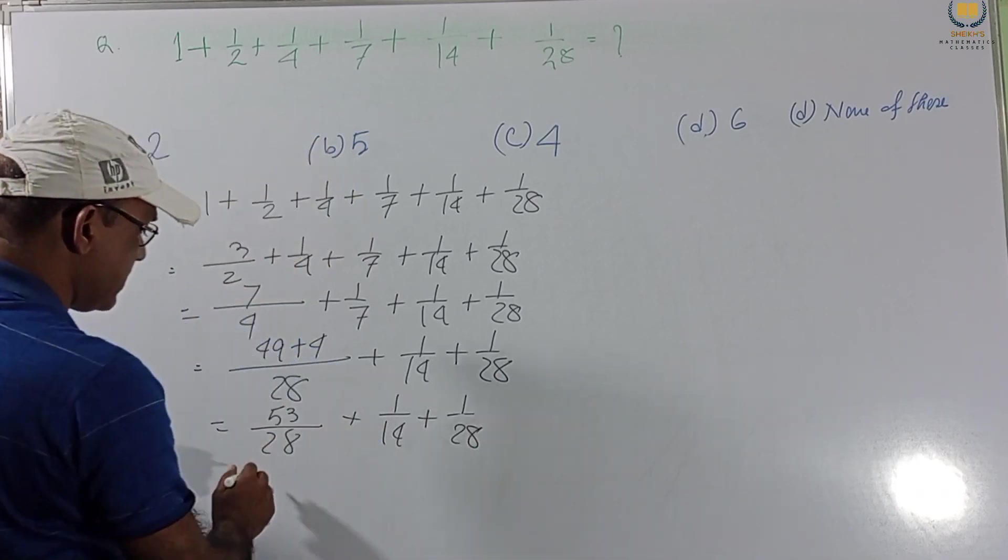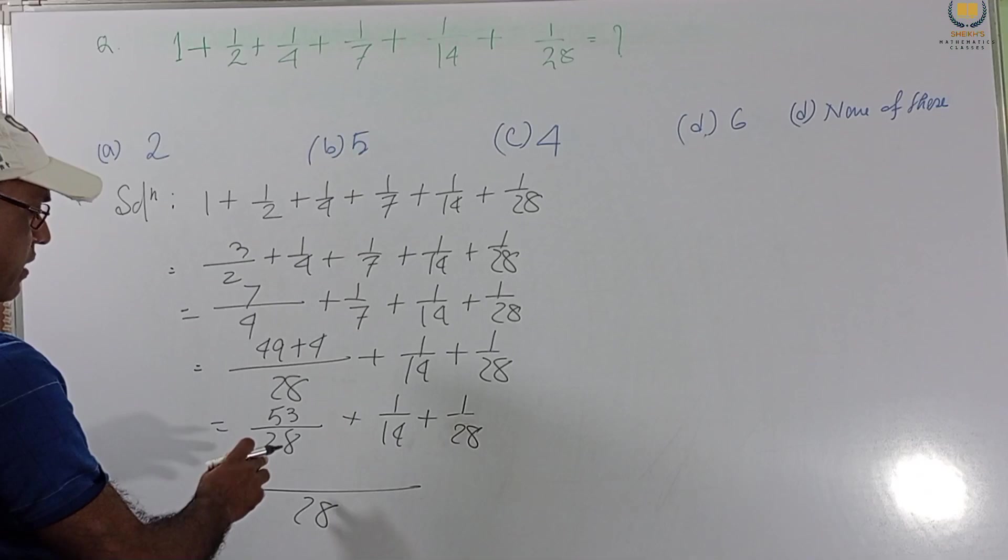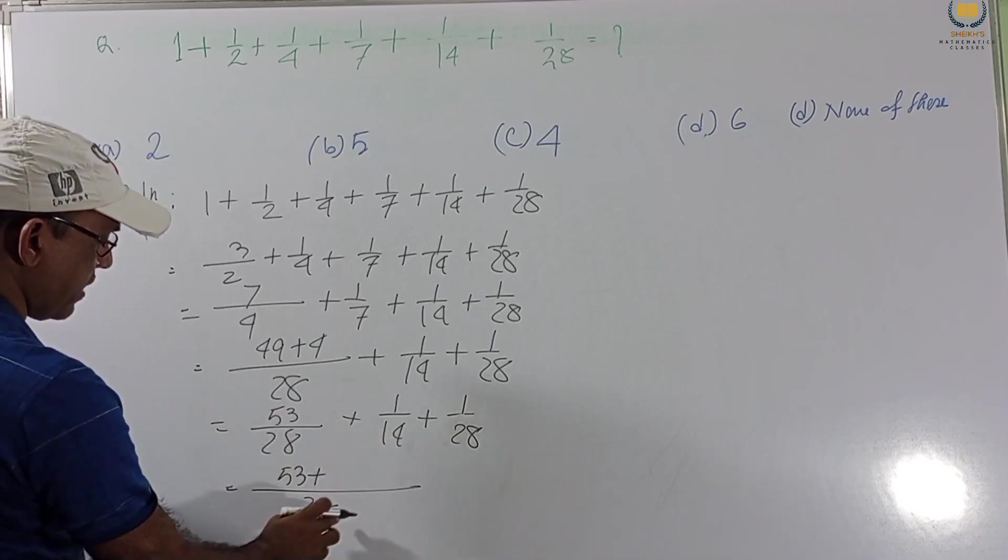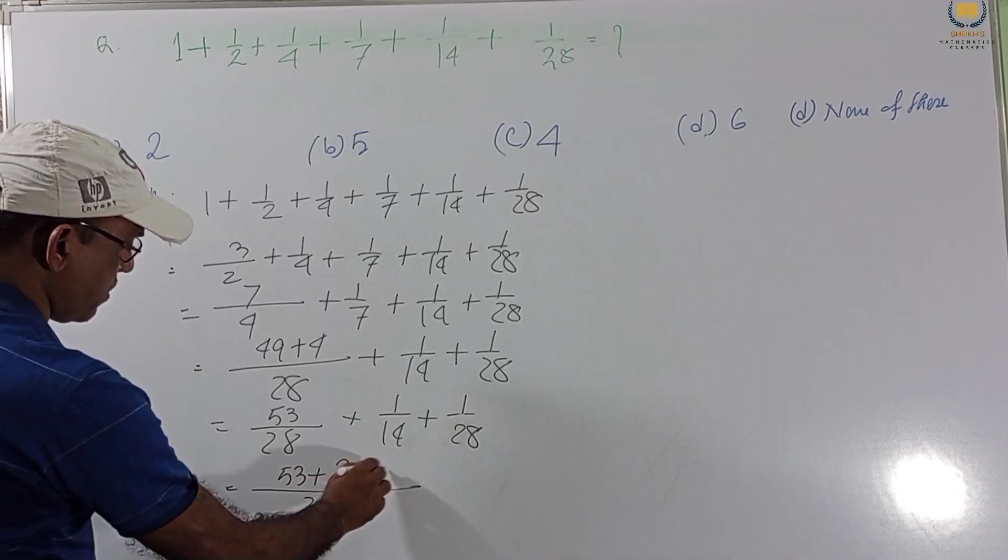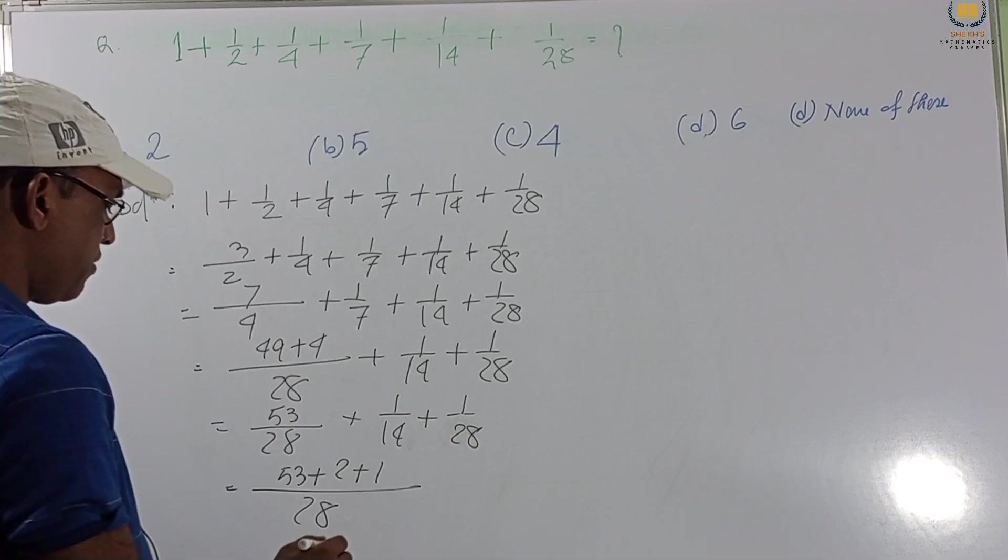Now LCM is 28. Then 28, 1 times. This is 53. And this is 14, 2 times. This is 2. 28, 1 times. This 1. Then this will be.